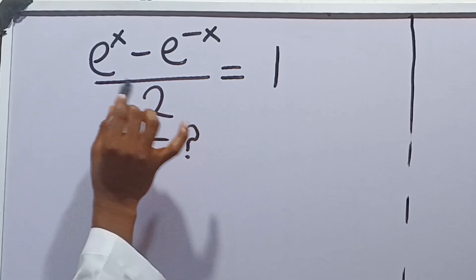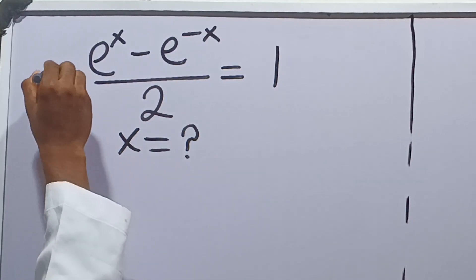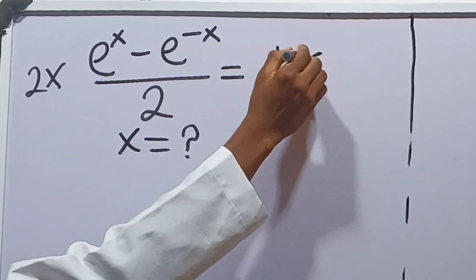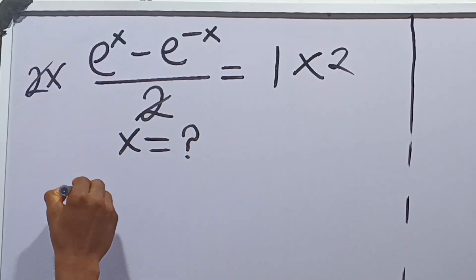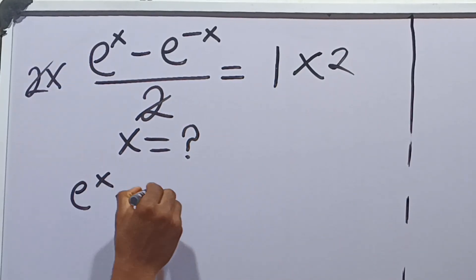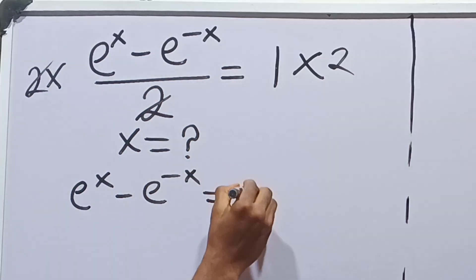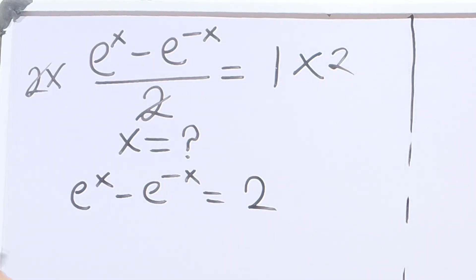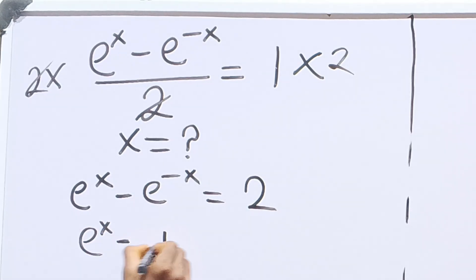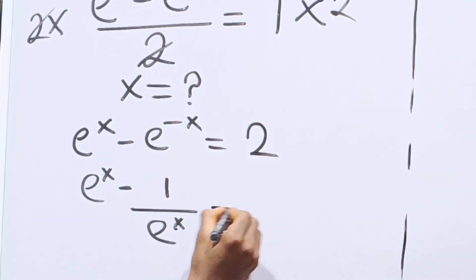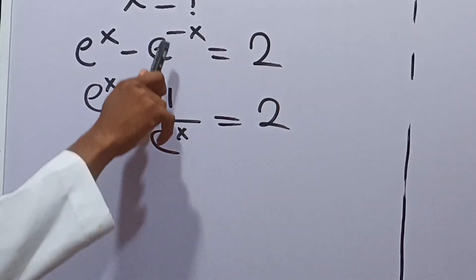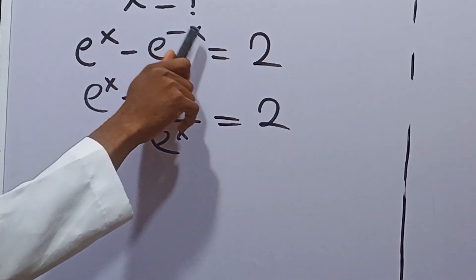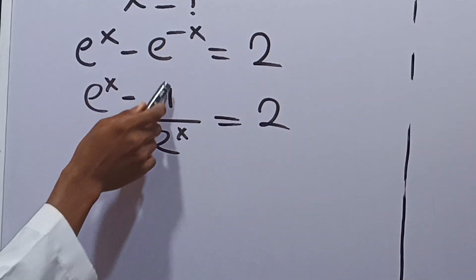First, let's multiply each term by 2. The 2s cancel, so we have e raised to the power x minus e raised to the power minus x is equal to 2. From here, we can rewrite e raised to the power minus x as 1 over e raised to the power x, applying the law that a raised to the power minus b equals 1 over a raised to the power b.